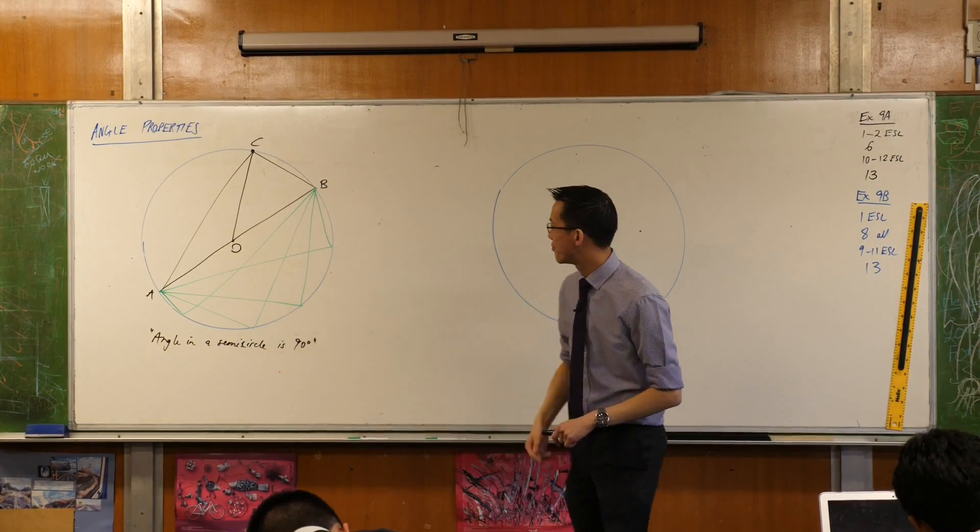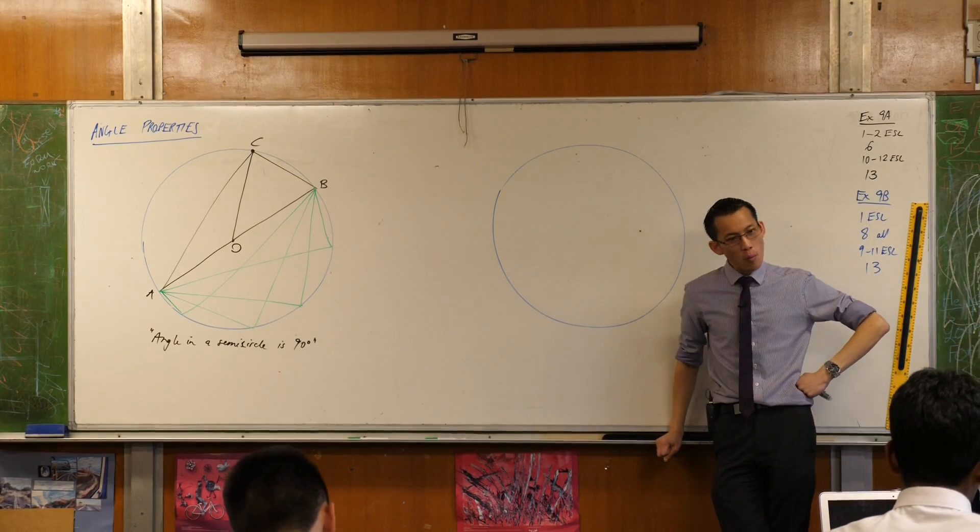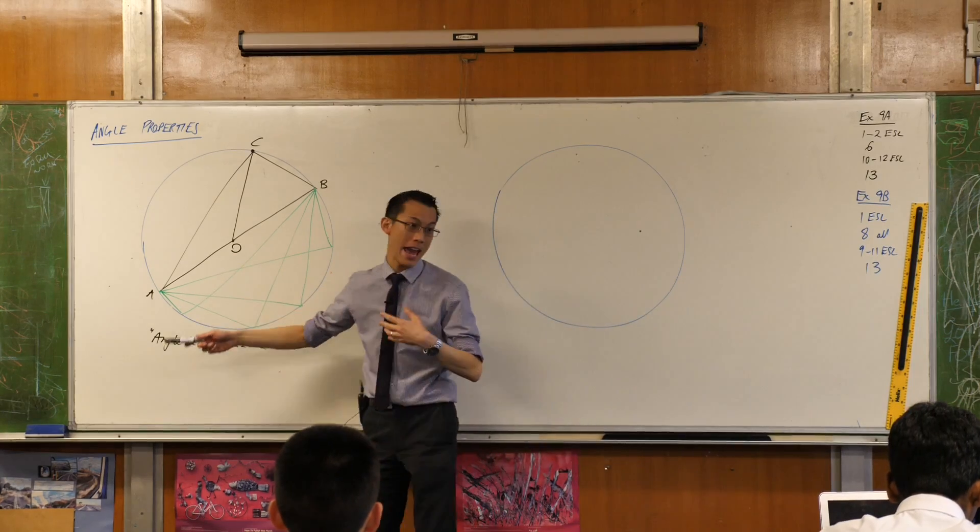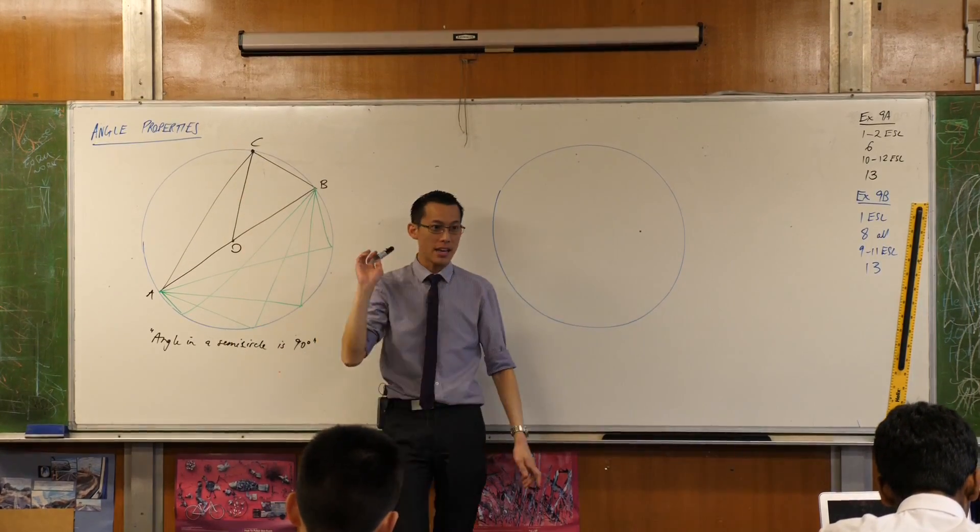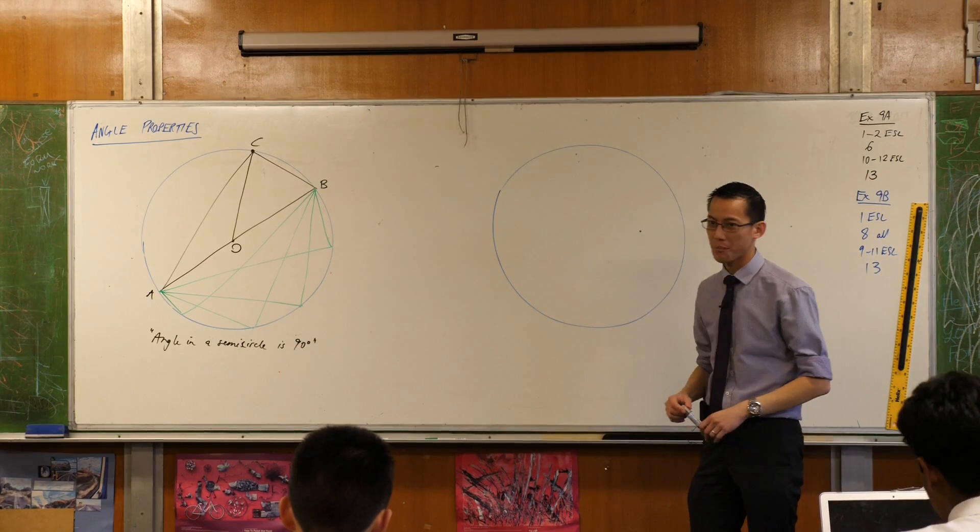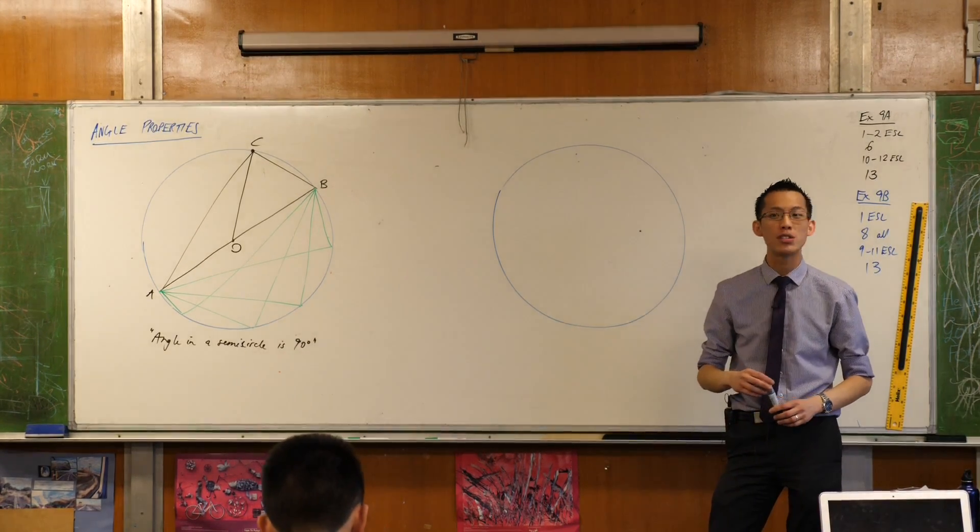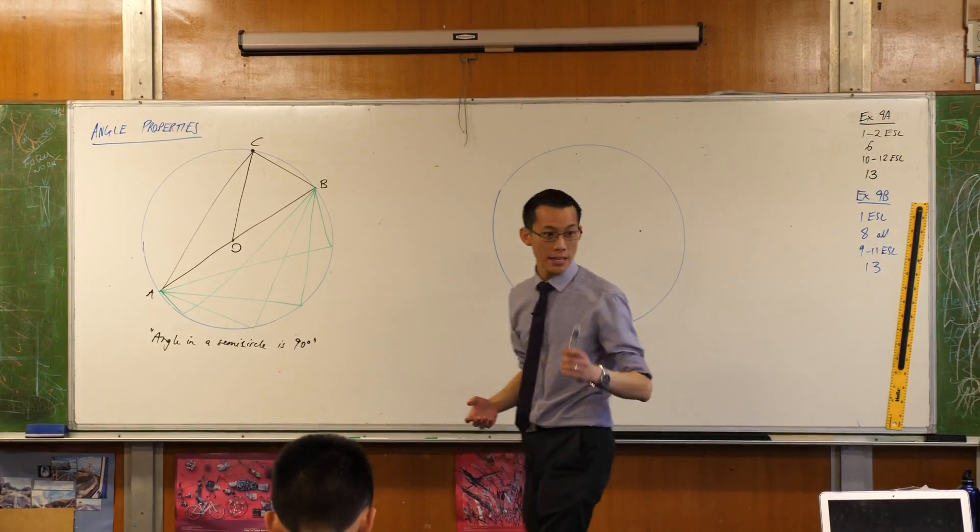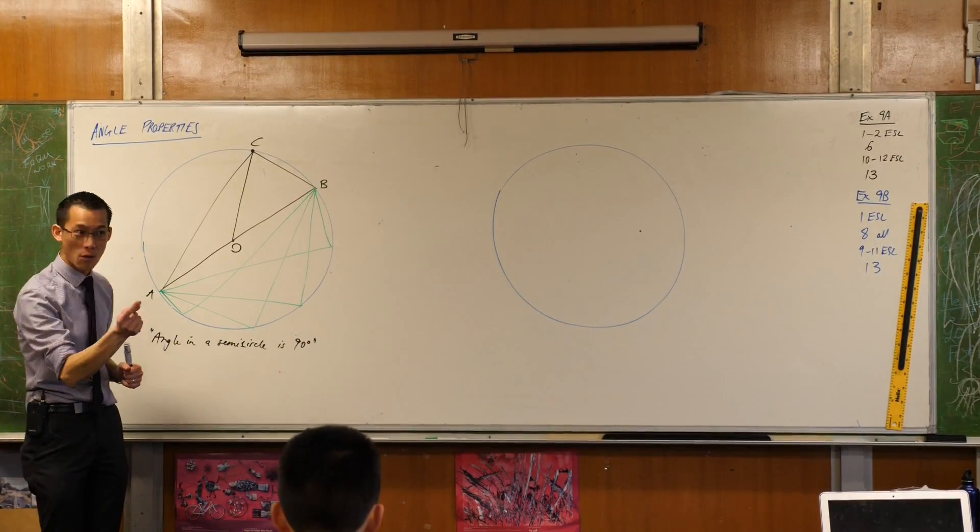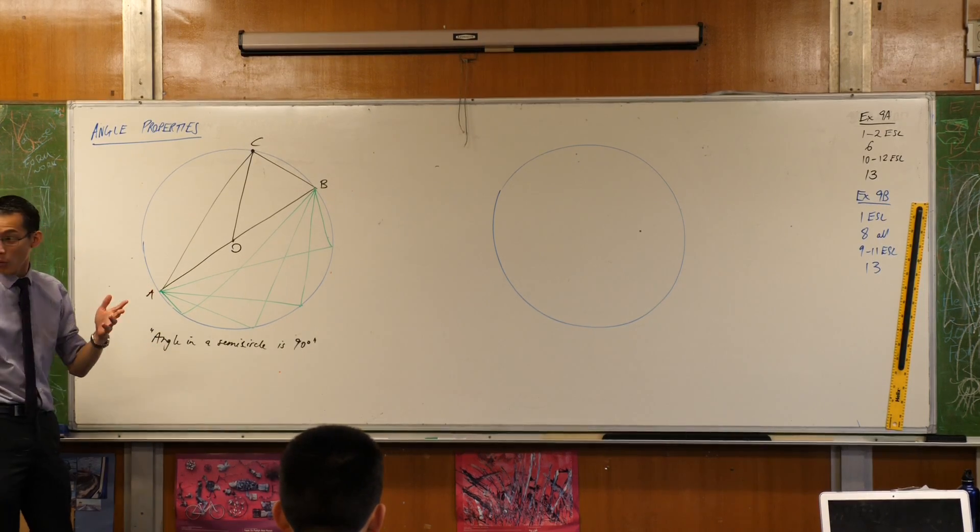Now, once you see that, I wonder how your brain is ticking over. Remember what we're trying to prove. What we're required to prove is that, or what we're aiming to prove, is that angle ACB is 90 degrees, always 90 degrees, no matter what. What kinds of shapes have I created by joining up this radius OC? What kind of shapes do you see? I see triangles, and they're not just any triangles. What kind of triangles are they? They're all isosceles. Why is that? There's a reason.